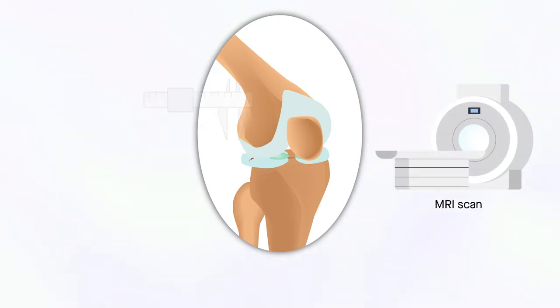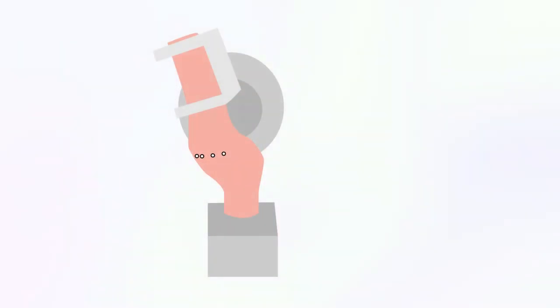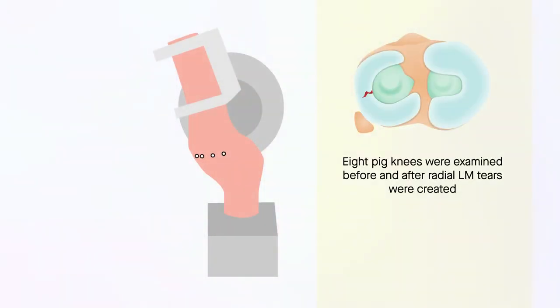However, it's not clear how the amount of displacement is related to the severity of the tear or to the degree of load transmission impairment. To help clarify these relationships, researchers used a robotic system to assess eight pig knees before and after radial LM tears were created.